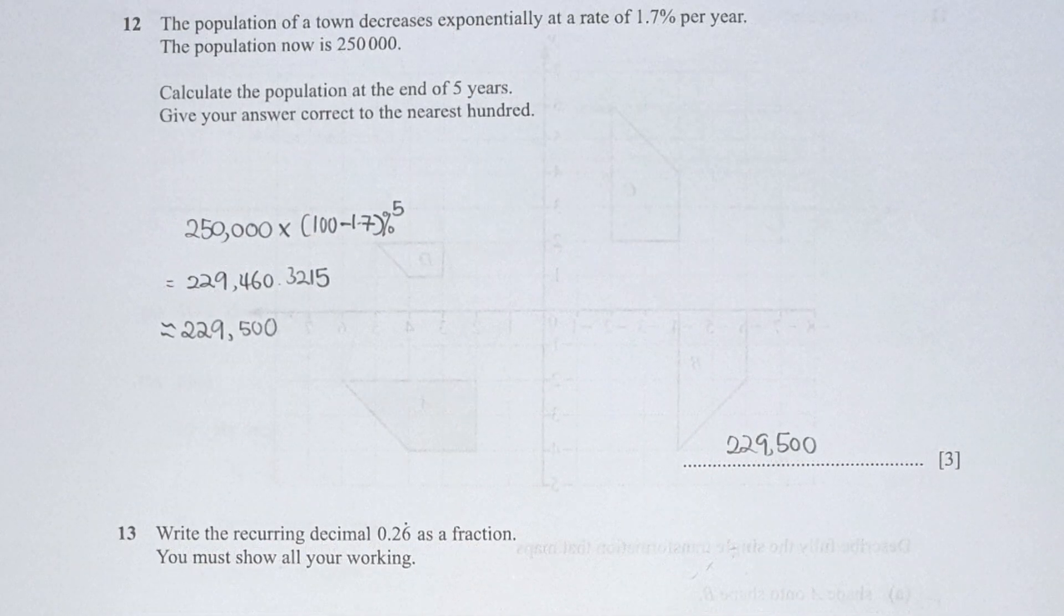Question 12: the keyword here is 'decreased exponentially,' so we use the compound formula. The variables I key into my calculator are 250,000 times (100 minus 1.7%) to the power of 5. Correct it to the nearest 100, and you should get 229,500.